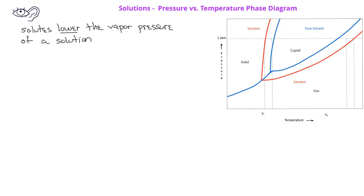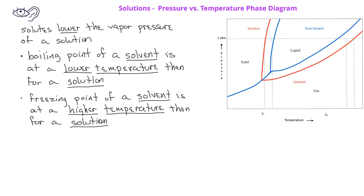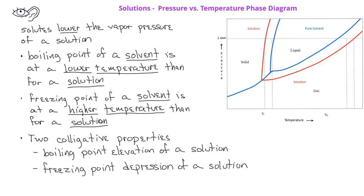We see that at a given pressure, the boiling point of the solvent, represented by the blue line, falls at a lower temperature than the boiling point of the solution. However, at the freezing or melting point, we see that the solution has a lower temperature for its freezing point than does the pure solvent. This boiling point elevation, as well as the freezing point depression that we see for a solution, are two additional colligative properties.